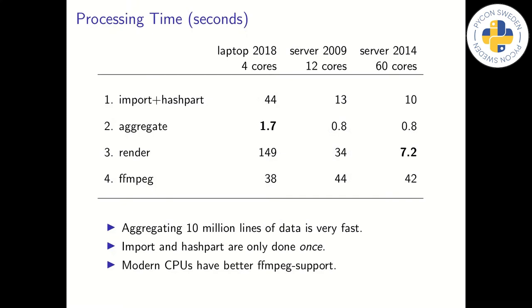Finally, we present some performance numbers. The table here shows execution times in seconds for the key processing steps. We have profiled this on three computers. A 2018 high-end laptop with four cores. A decade-old inexpensive workstation with 12 cores. And an in-between rack server with 60 cores and a terabyte of RAM. Clearly, aggregating the large dataset into items ready for rendering is a very fast operation. We could aggregate a billion lines in less than half an hour. Probably faster if we spend time optimizing the code for performance, which we have not done.